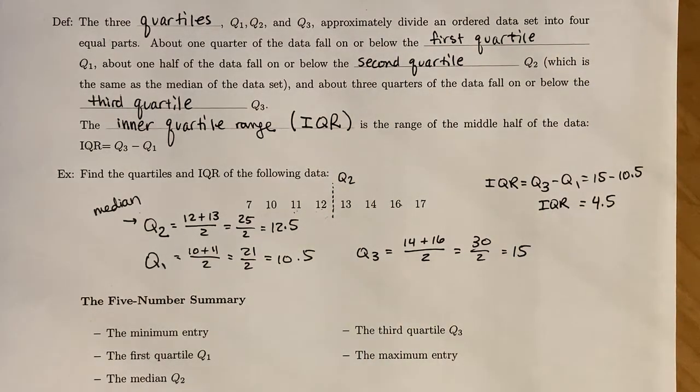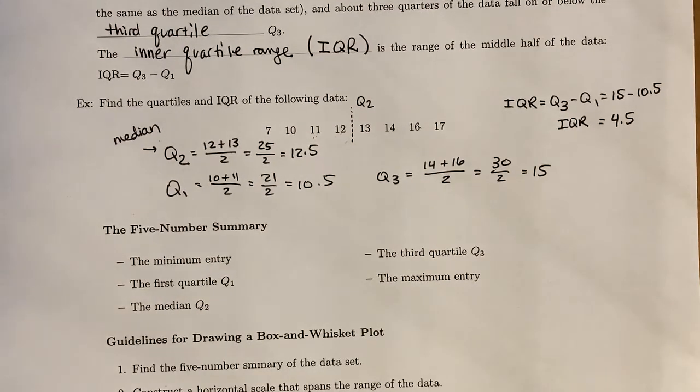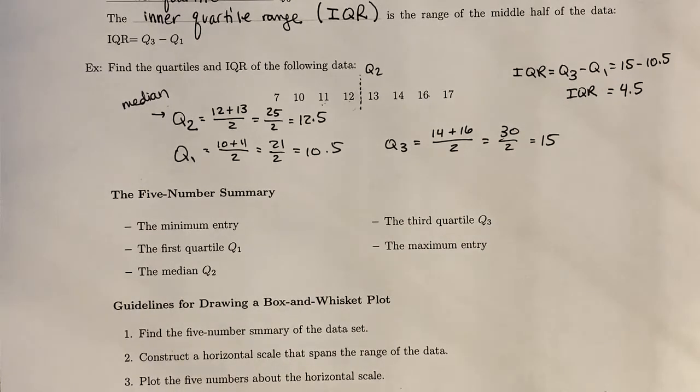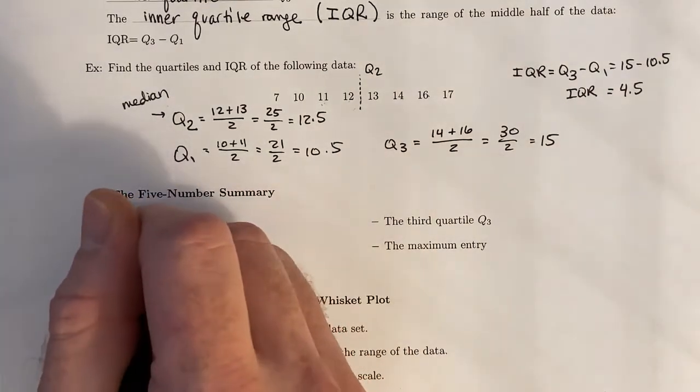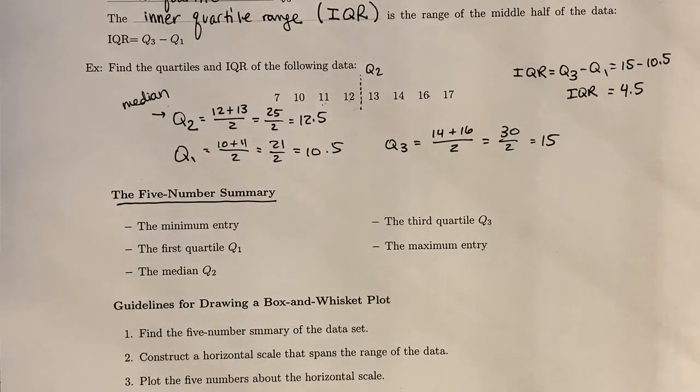Those are three numbers, and it's also good to state what the minimum entry is and what the maximum entry is. Once you have the minimum entry, the first quartile, median, third quartile, and maximum entry, that leads us to this five-number summary. If on an exam or worksheet I ask for the five-number summary, these are the five numbers that I'm looking for.